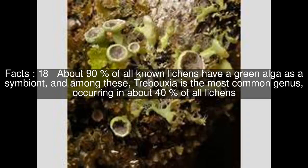About 90% of all known lichens have a green alga as a symbiont, and among these, Trebouxia is the most common genus, occurring in about 40% of all lichens.